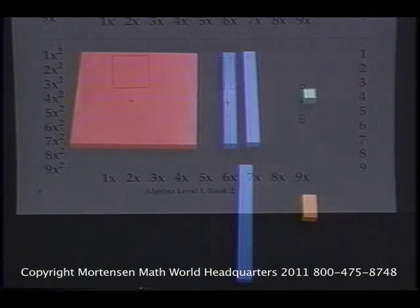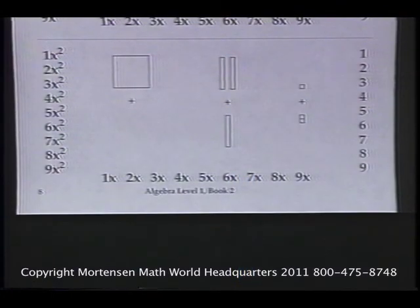We have how many X-squares? One. How many X's? Three. How many units? Three. Our answer would be one X-square, three X's, and three units.